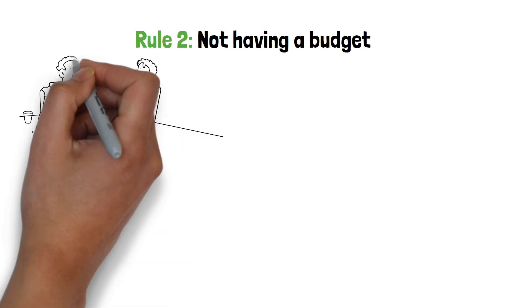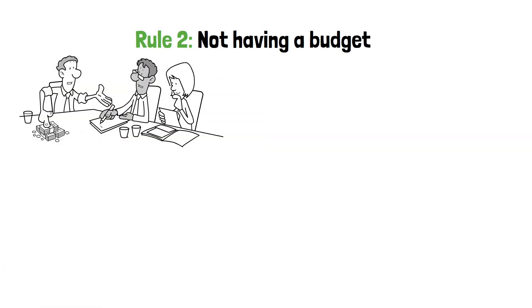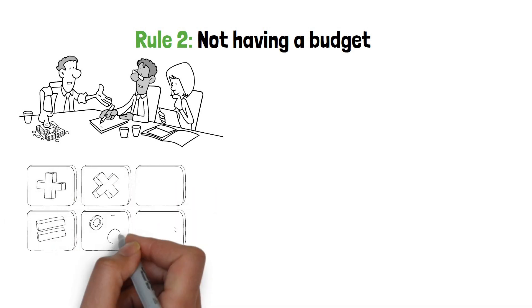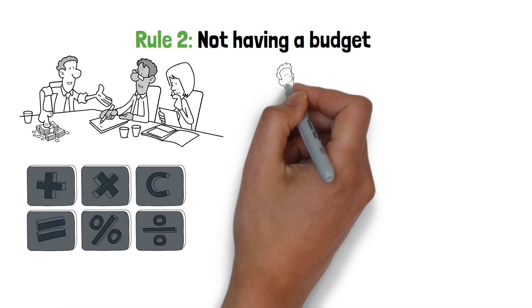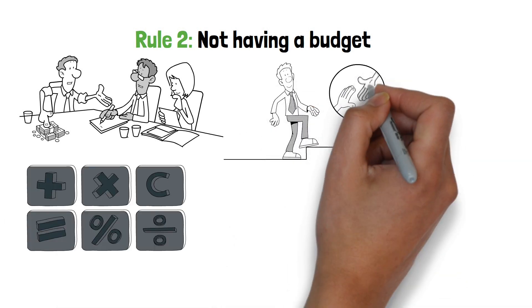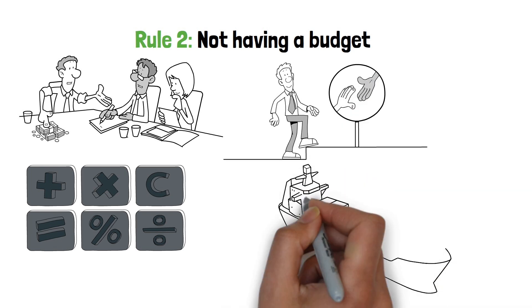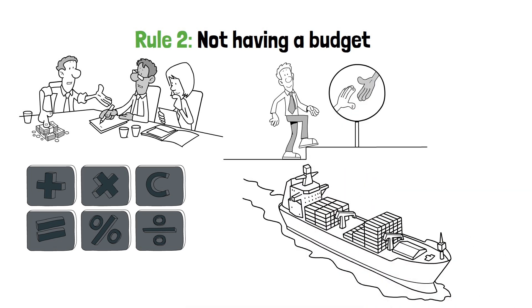Rule 2: Not having a budget. In the realm of personal finance, a budget is akin to a compass guiding you through the treacherous terrain of financial decision making. Without one, you're like a ship lost at sea, aimlessly drifting from one impulsive purchase to the next.